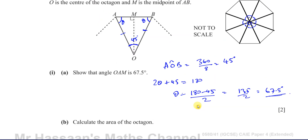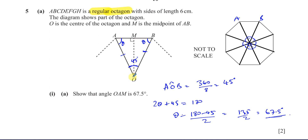Then it says: calculate the area of the octagon. To find the area of the triangle, we could use a variety of methods. We know that this angle is now 67.5 and this length is 6 centimeters. I could use the sine rule, the cosine rule, or SOH-CAH-TOA trigonometry because we have a right angle.